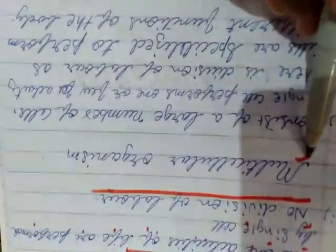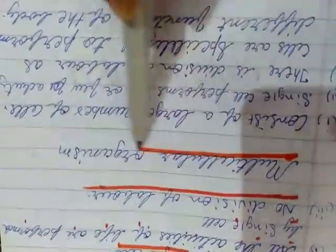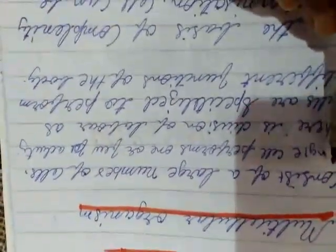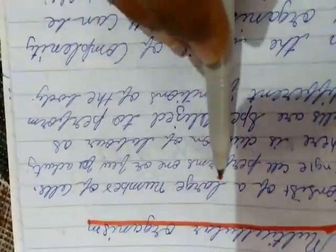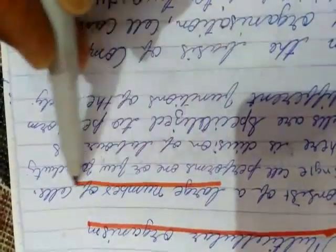Now, the multicellular organism. There are a few characteristics of multicellular organisms. First, multicellular organisms consist of a large number of cells.